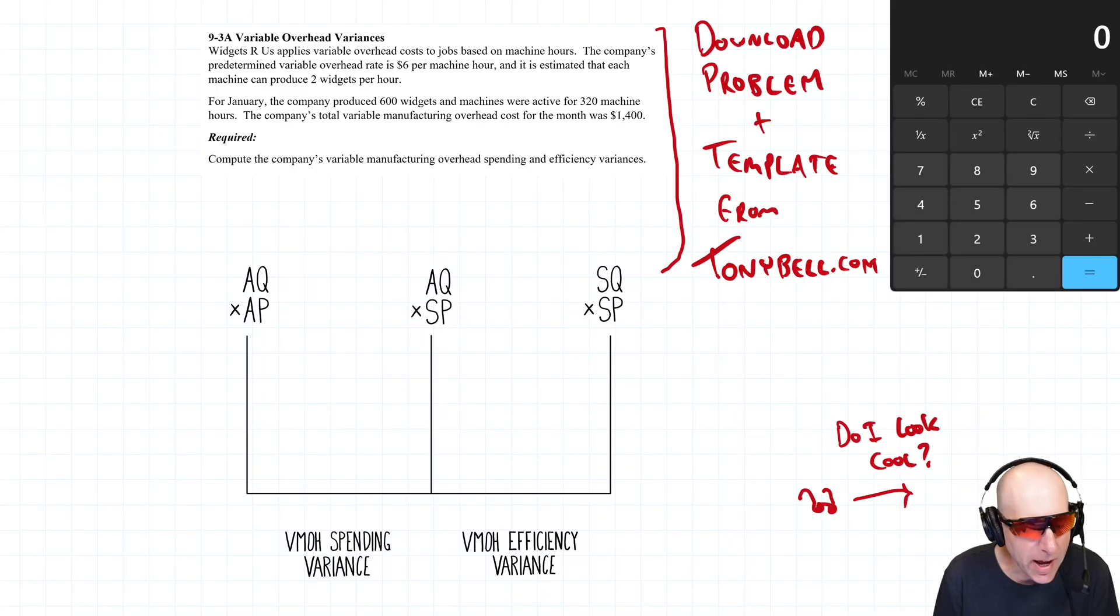Let's take a run through problem 9.3a: variable overhead variances. Very much like the first cousin of the direct labor variance, so if you did well on labor variances, overhead variances should be the same.